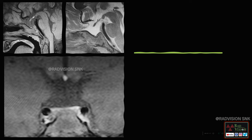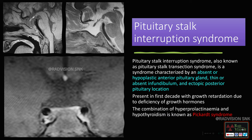Whenever you see this classical triad, definitely suspect pituitary stalk interruption syndrome. This syndrome is characterized by: absent or hypoplastic anterior pituitary gland, thin or absent infundibulum, and ectopic posterior pituitary location. Due to absence of anterior pituitary hormones and growth hormone, these patients mostly present in the first decade with growth retardation. The combination of hyperprolactinemia and hypothyroidism is known as Pickard syndrome — remember pituitary stalk interruption syndrome and Pickard syndrome.